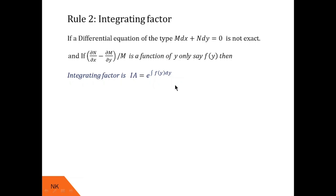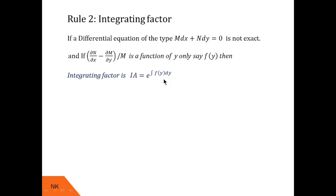In Technique 1, we took the expression (∂M/∂y − ∂N/∂x) / N, and if it was a function of x alone, say f(x), then the integrating factor was e raised to the integration of f(x) dx. Here the situation is completely different. We take the expression (∂N/∂x − ∂M/∂y) / M, and if this expression turns out to be a function of y alone, then we take the integrating factor as e raised to the integration of f(y) dy.